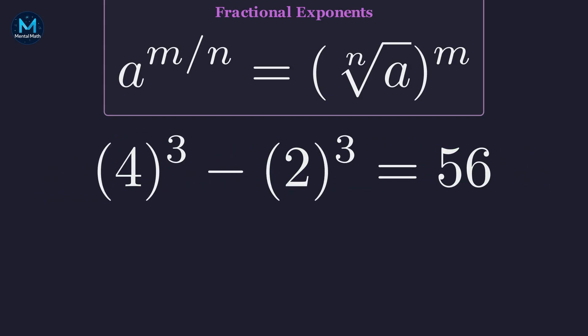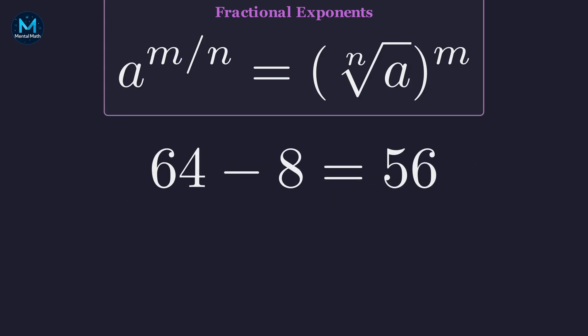Now we cube them. 4 cubed is 64. 2 cubed is 8. 64 minus 8 equals 56. Perfect. Our solution checks out.